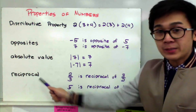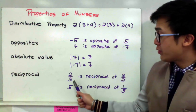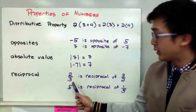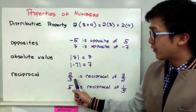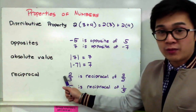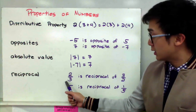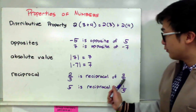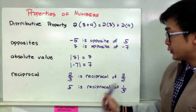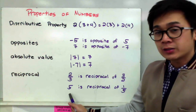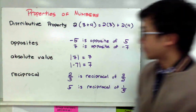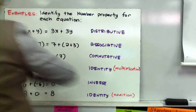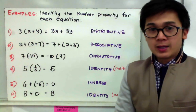Now for the reciprocal: if we have two over three, the reciprocal of two over three is three over two, which is basically flipping the numerator and the denominator. So two-thirds and three over two are reciprocals of each other. And if I have five, the reciprocal of five is one over five.